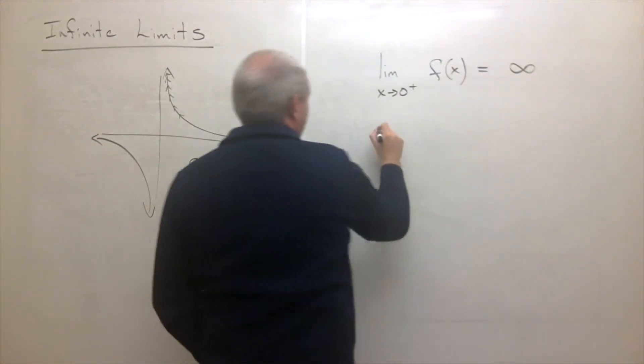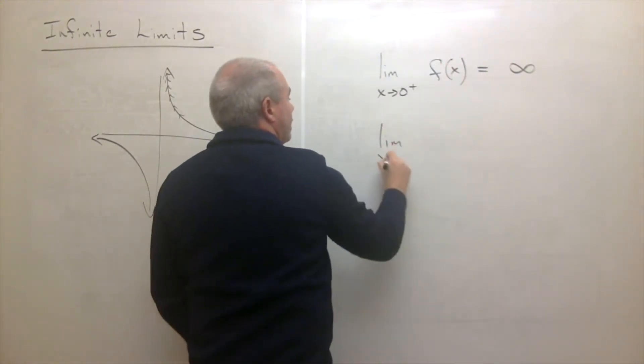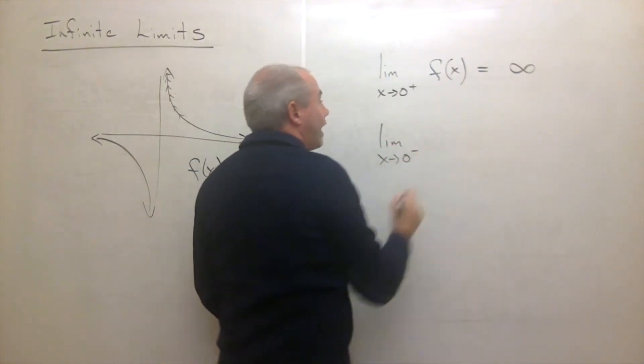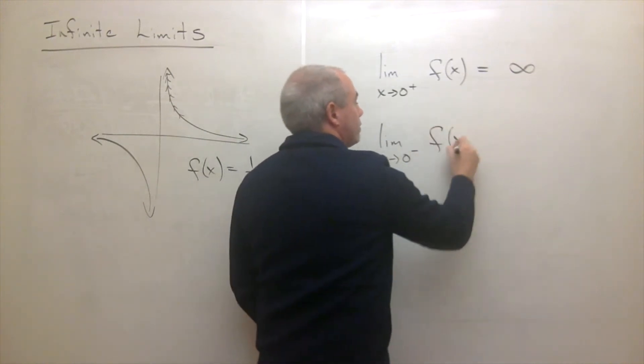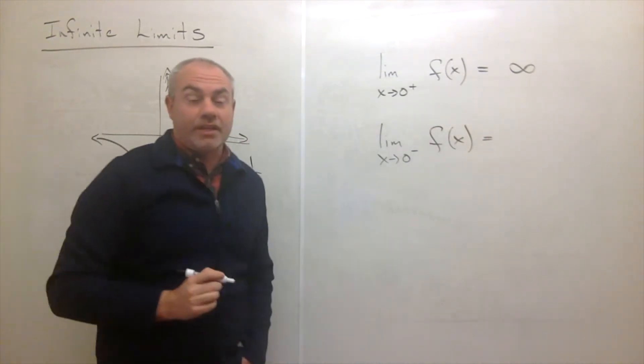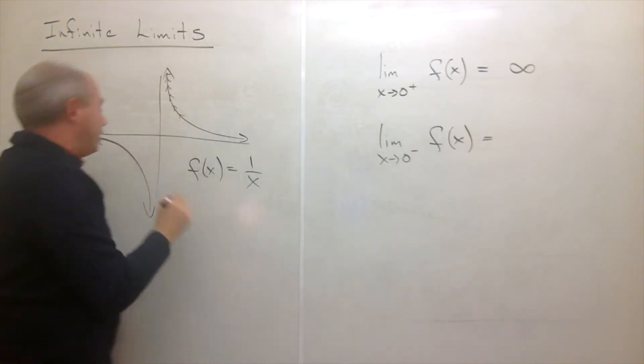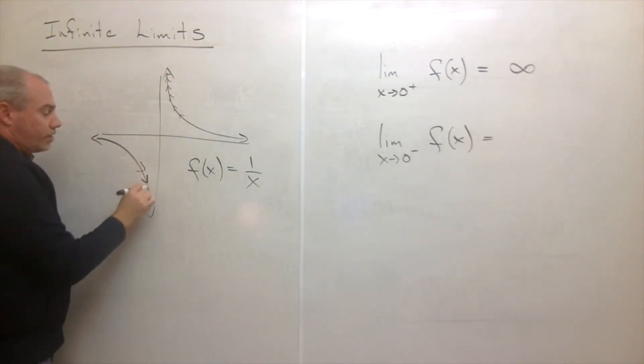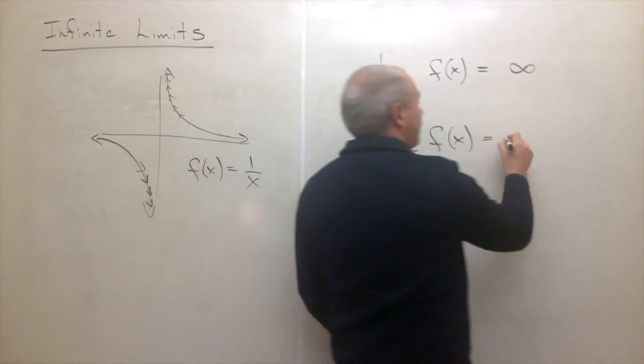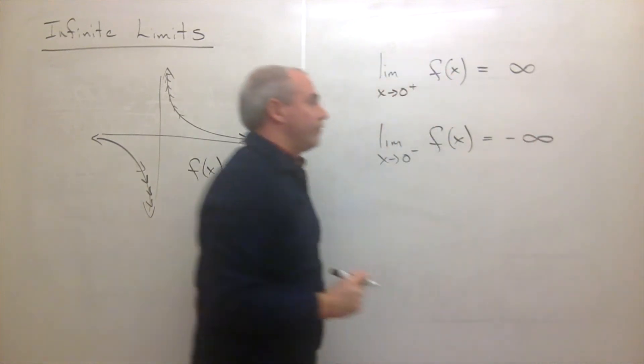Similarly, I could talk about the limit as x goes to 0 from the left of f(x). And this would be, as I get closer and closer to 0 from the left side, we're going down to negative infinity. And I would get negative infinity.